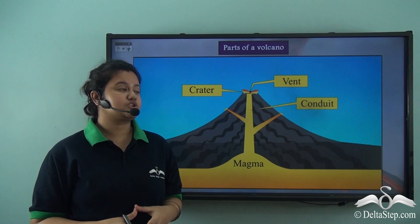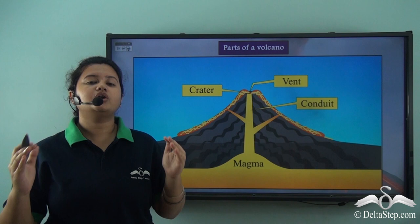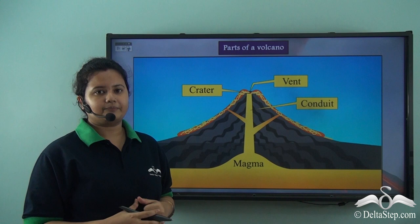This crack or pipe is called a conduit. The weak spot or the opening on the Earth's crust through which a volcano erupts is called a vent. Now a hollow depression caused due to eruption of a volcano is called a crater. Now can you see a hot fluid coming out of a volcano? Do you know what it is called?